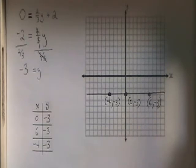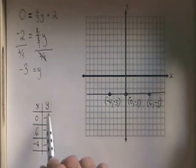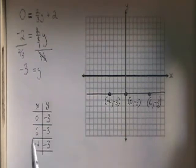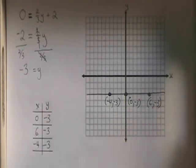This is how we graph a horizontal line. We isolate the y, we find the number y is equal to, and we fill the y side of the table with that number. We choose any numbers we want for the x side of the table, but we make sure x is equal to 0 is one of them. And then we graph the line, labeling the three points that were in the table.